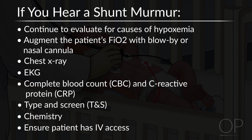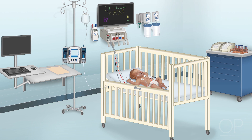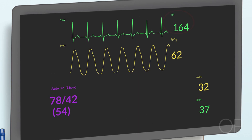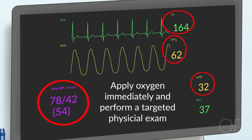Depending on when the patient's most recent labs were and their presentation, consider sending a CBC and CRP to evaluate for anemia and signs of infection, a type and screen if the patient does not have an active one, and a chemistry to evaluate for electrolyte imbalances. If your patient does not have IV access, you should start mobilizing resources to obtain IV access. Now, let's return to your patient for a moment. Upon your arrival, the vital signs are heart rate of 164, oxygen saturation of 62%, respiratory rate of 32, and blood pressure of 78 over 42.